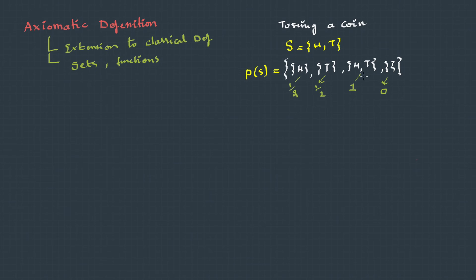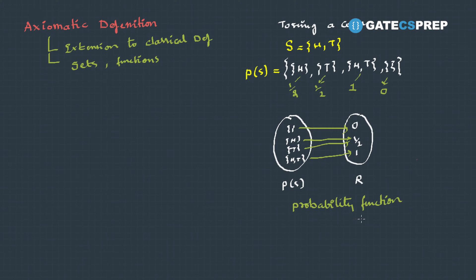Now if I take this as my domain, which is the power set of S, and if I take the real numbers as my codomain, we can map each of the possible elementary events with a real number. And this mapping of the events with real numbers is called the probability function. Now what exactly this probability function is and how we're going to use it, this we'll be discussing in more detail in distributions. For now, just focus on a few points.